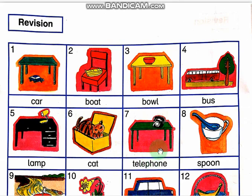Next, a telephone. What is this? It is a telephone. What color is it? It is black. It is a black telephone. Where is the black telephone? It is on the green table.